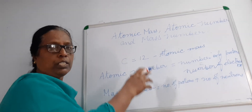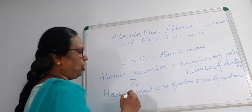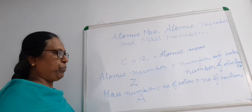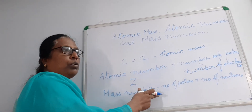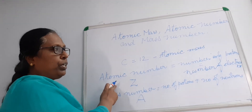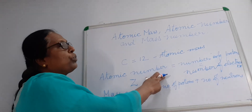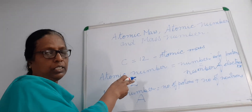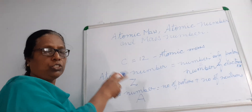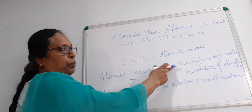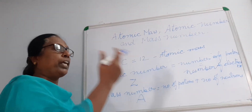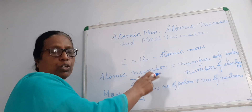The number of protons plus the number of neutrons is denoted with the capital letter A. So mass number equals number of protons plus number of neutrons. We know that any atom is neutral, so the protons' positive charge and the electrons' negative charge are equal in number.